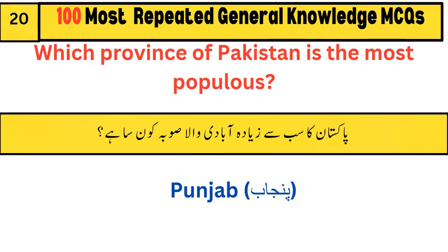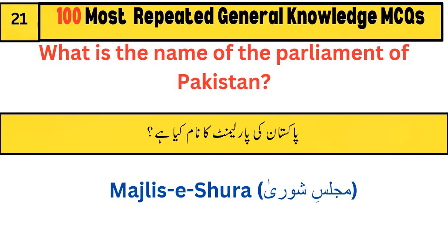Which province of Pakistan is the most populous? Punjab. What is the name of the parliament of Pakistan? Majlis-e-Shoora.